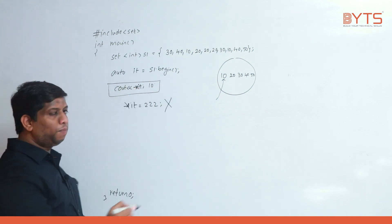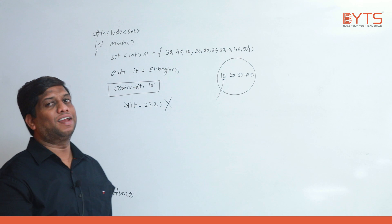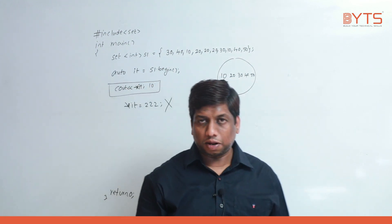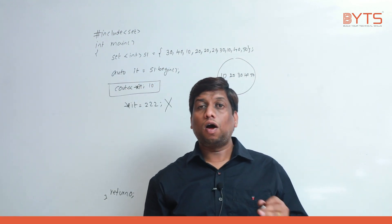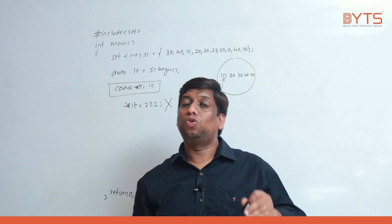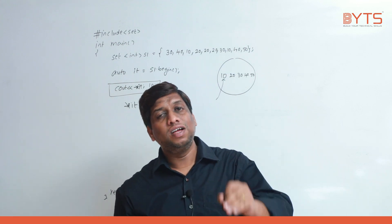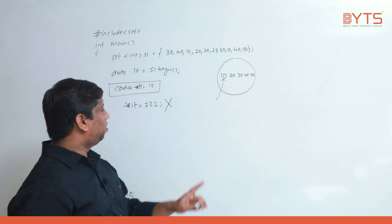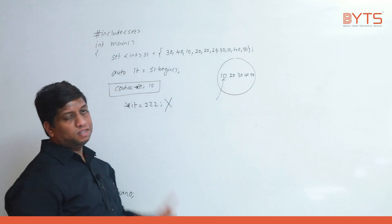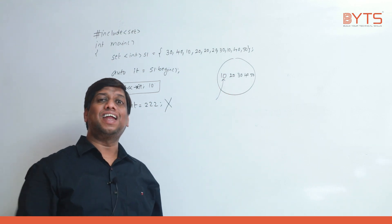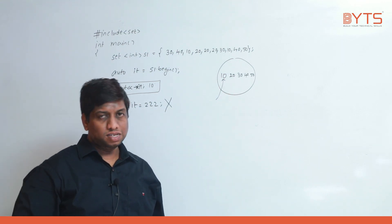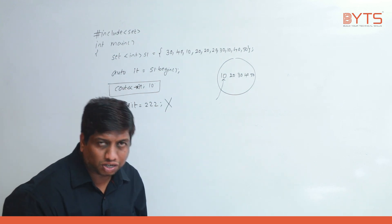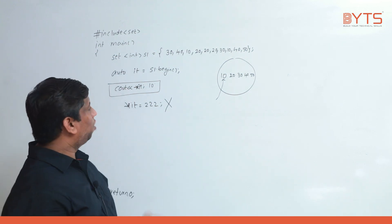auto it = s1.begin() — this points you to the first element in the set. cout << *it gives the answer 10. If you write *it = 322, you are going to get a compilation error because we cannot change the content in the set. Once the first element is 10, it is always 10 — all values in the set are constants.